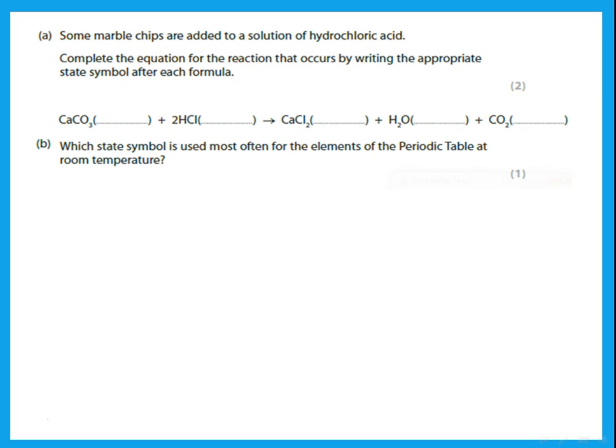Some marble chips are added to a solution of hydrochloric acid. Complete the equation by writing the appropriate state symbols. If it says marble chips, that means these are pieces of solid, so that's (s). A solution of hydrochloric acid means it is aqueous (aq). It gives calcium chloride, which is also aqueous (aq). Water is a liquid (l), and carbon dioxide is a gas (g).